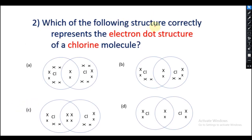Question number 2: Which of the following structure correctly represents the electron dot structure of a chlorine molecule? Let us try to understand the question correctly. Here the electron dot structure of a chlorine molecule is asked. In an electron dot structure of a molecule there must be 8 electrons around each element of the molecule.